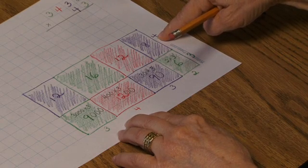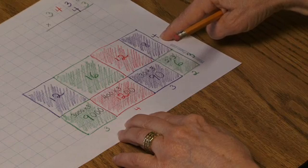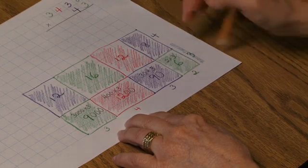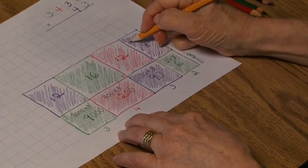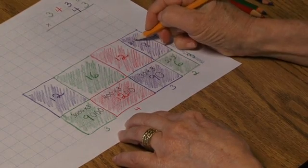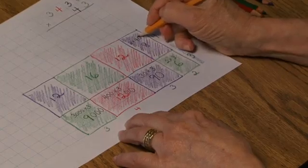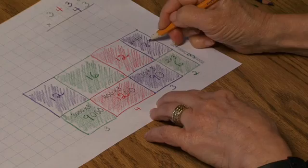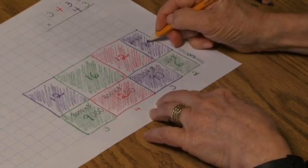On the second row, everything is multiplied by 4 tens. So we have 2 units taken 4 tens or 40 times. And the 8 stands for 8 tens or 80.